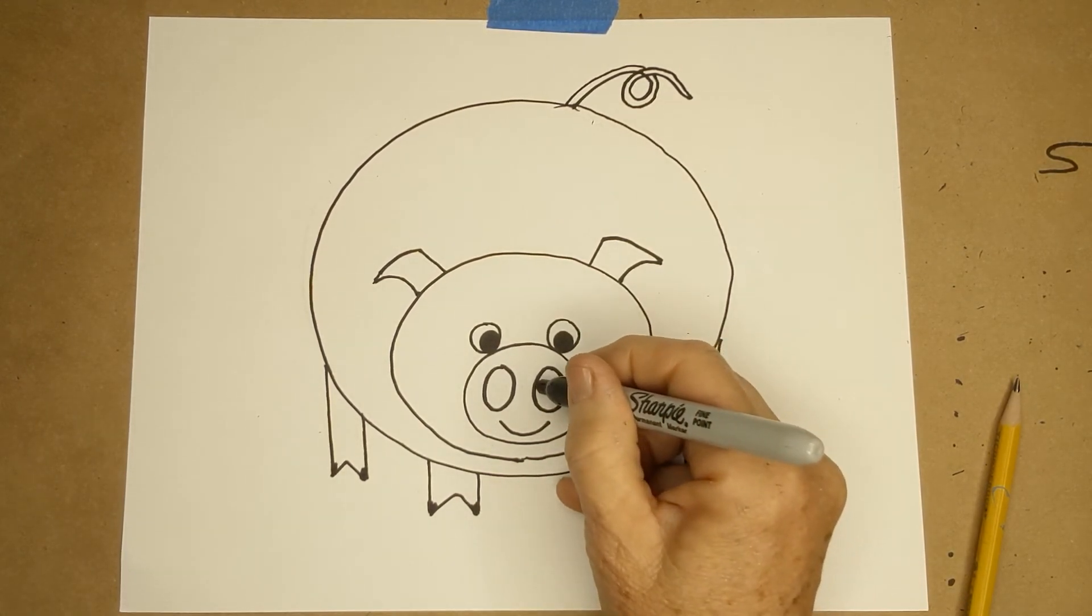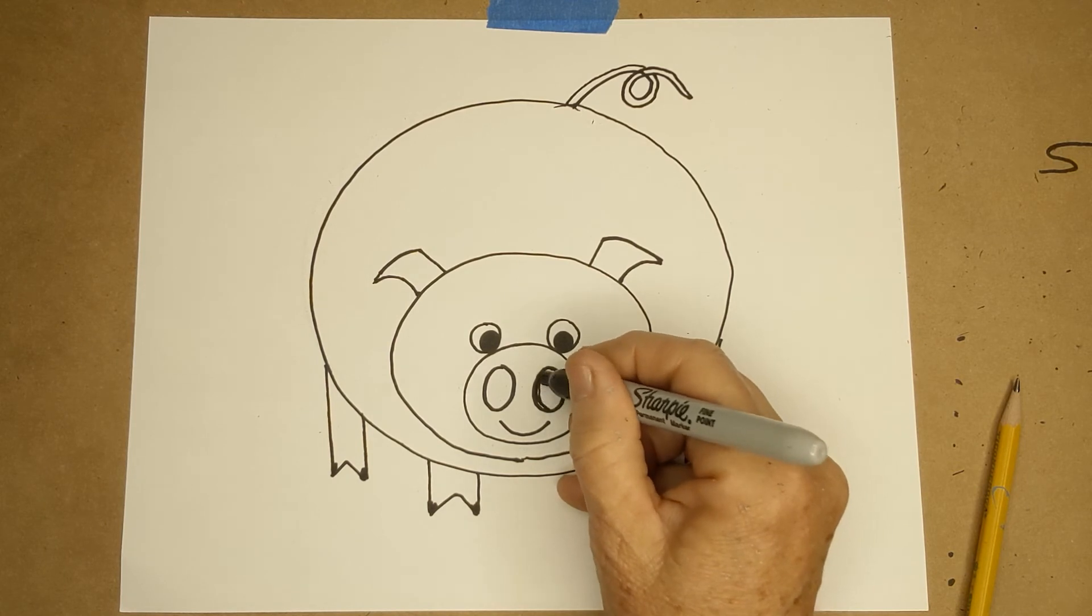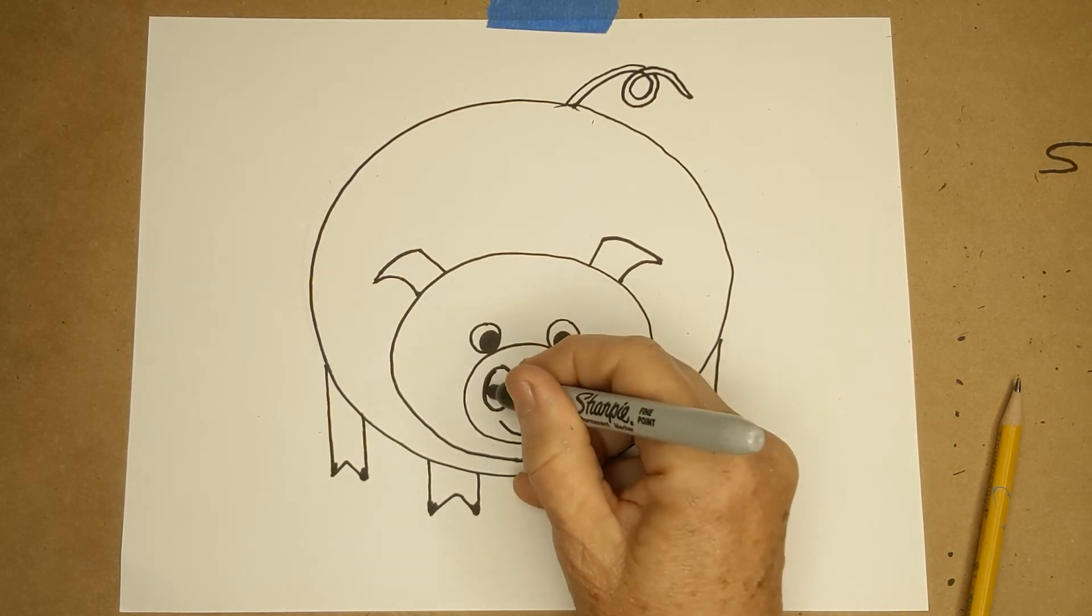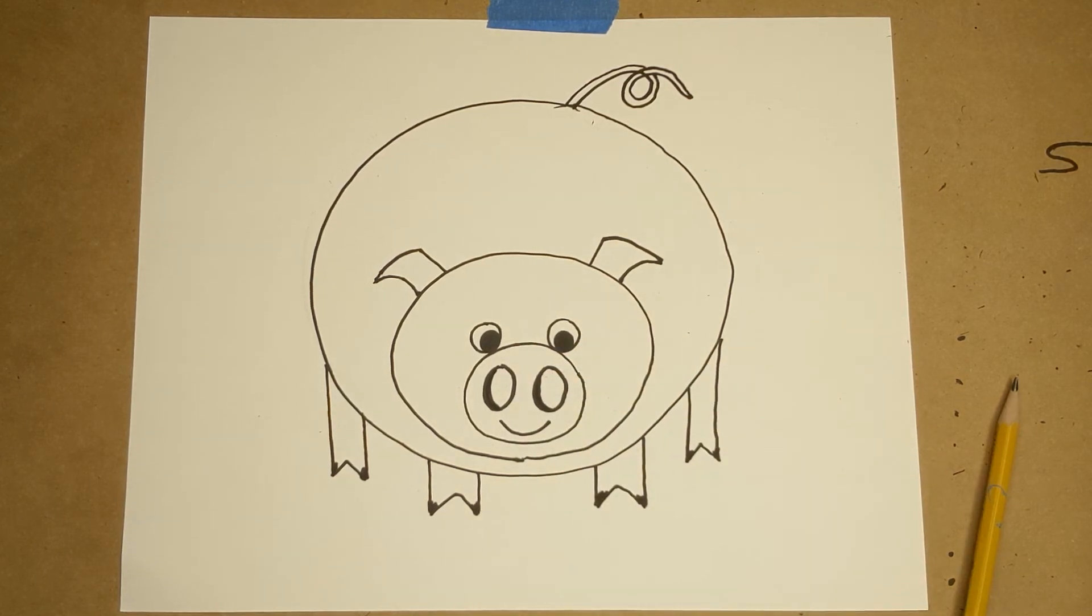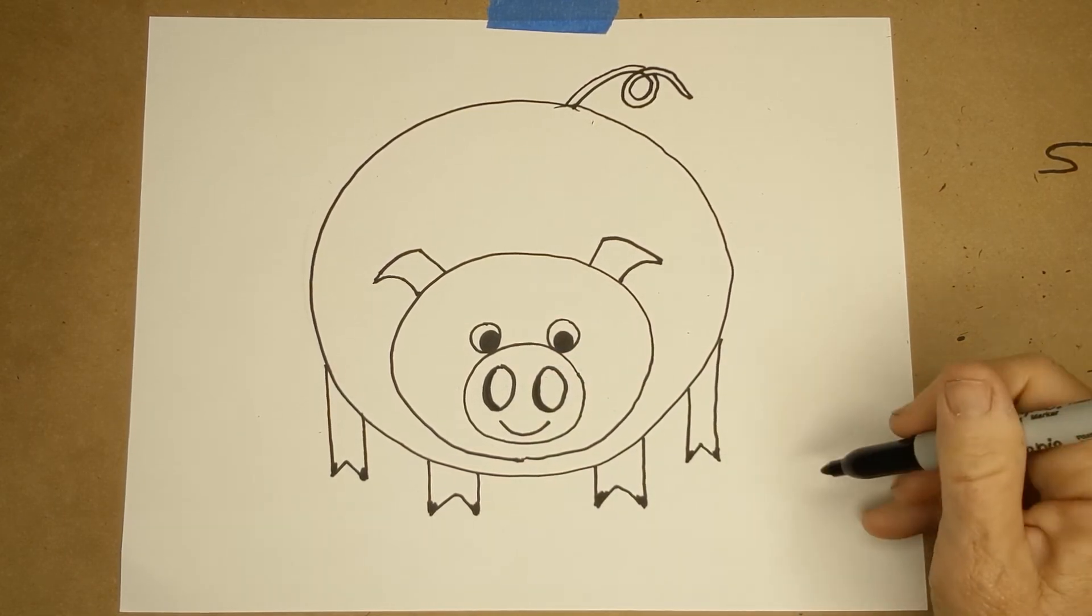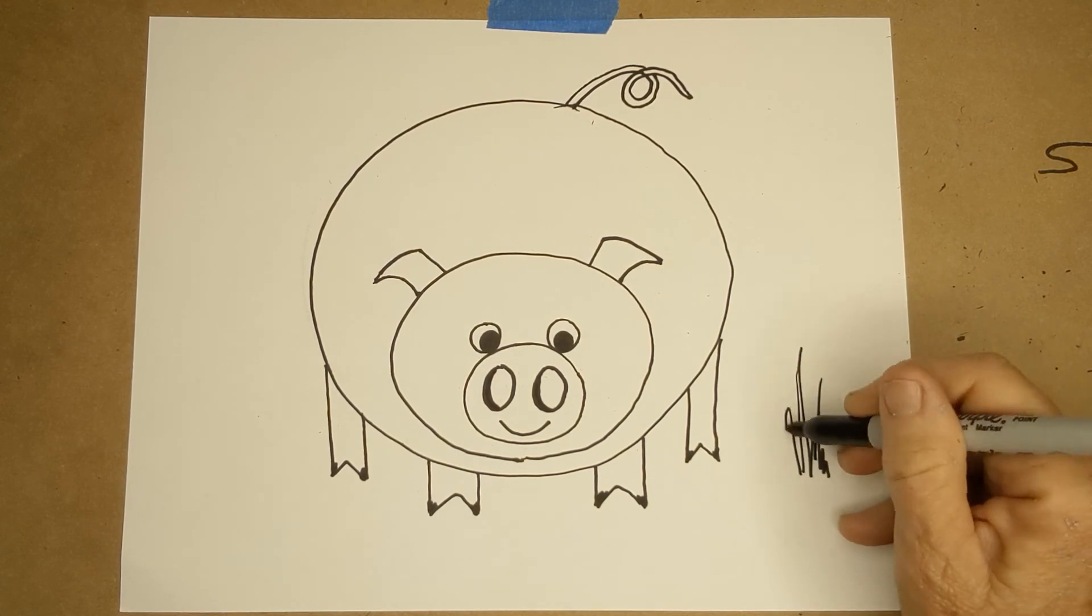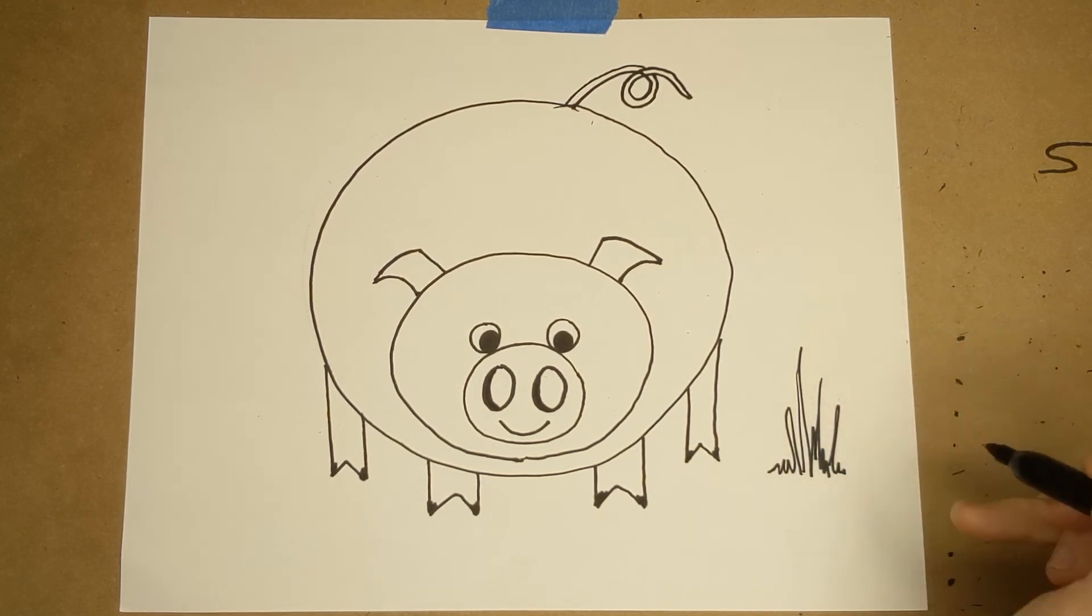If you want, you could give him a little bit of shadow in his nostrils like this. Coloring him pink would be so cute. I'm gonna go ahead and do a little bit of zigzag grass clumps near him.